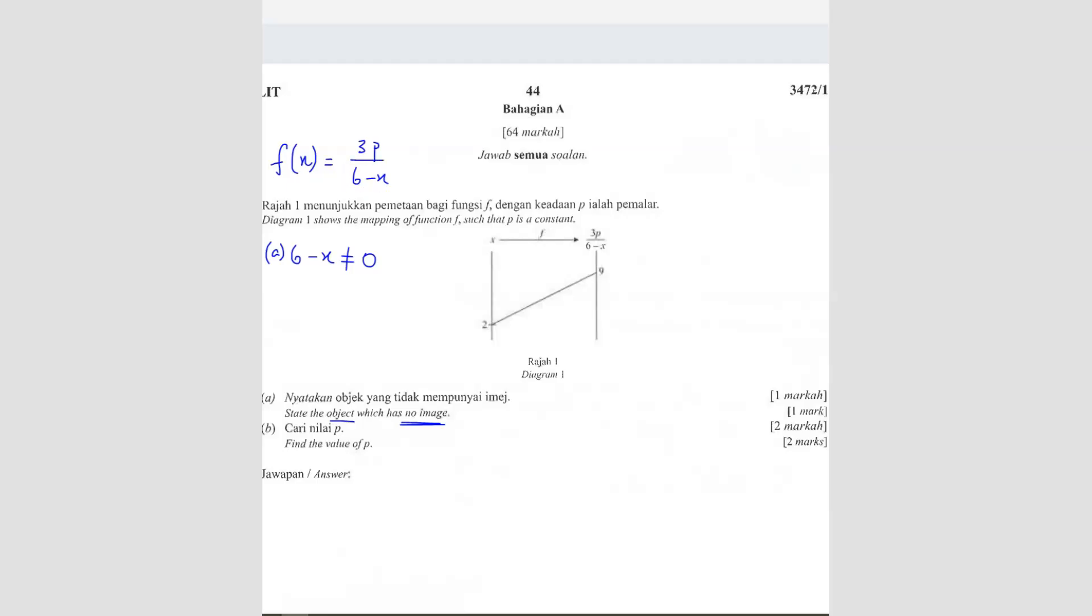6 minus x cannot equal 0. They are asking which object will have no image. The object will have no image when 6 minus x equals 0. So we want to find x equals to 6. When x equals 6, let's say here is 6, this one won't exist because you cannot connect to anywhere. If object is 6, you will get math error. That's what they mean by the object which has no image, when x equals 6.